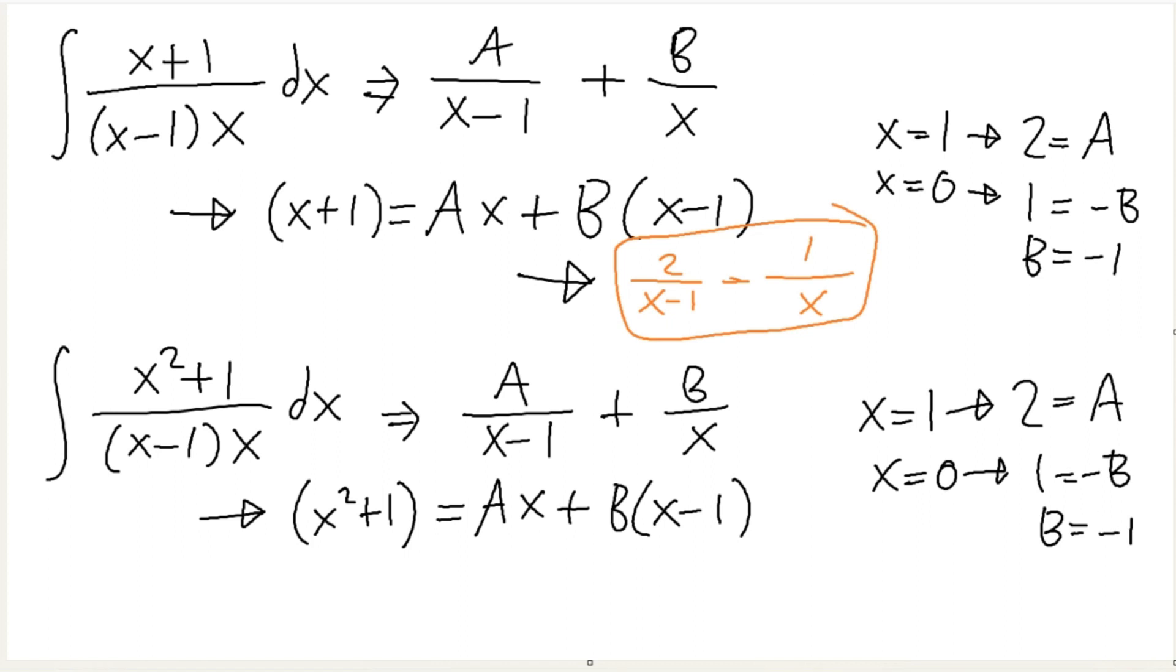Wait, but what happened? What happened here? Isn't this the same thing? Is this not the same thing? What happened here? 2. Okay, so A is equal to 2 over x minus 1, and then minus 1 over x. That's the same thing. What happened? This and this are the same thing, but this and this are not the same thing.